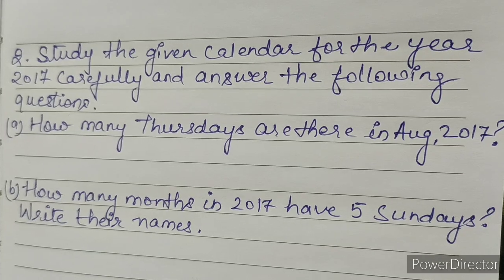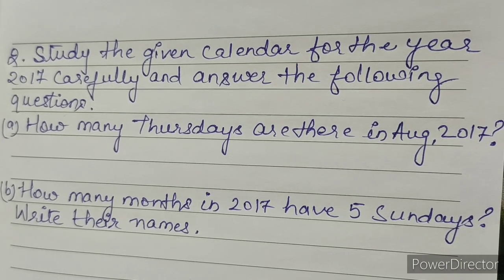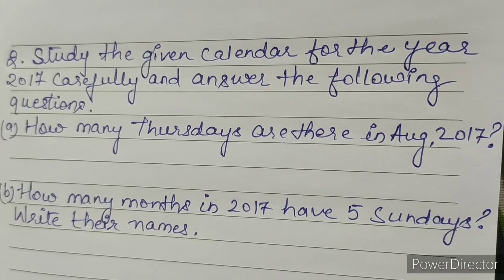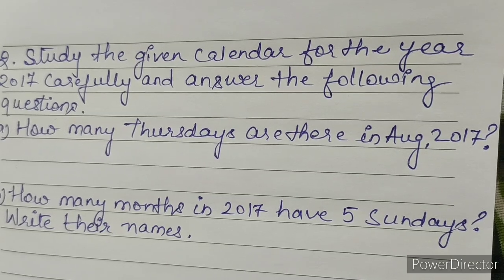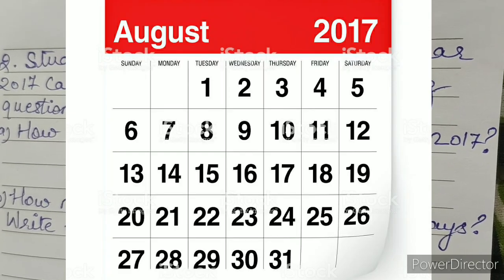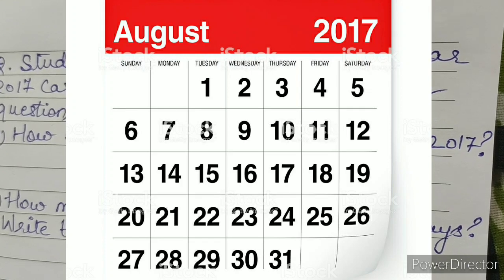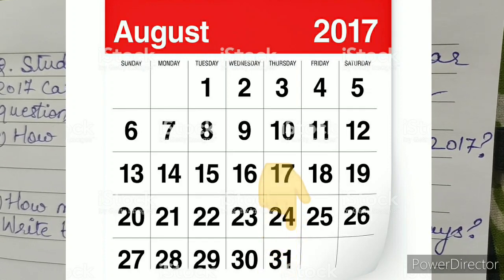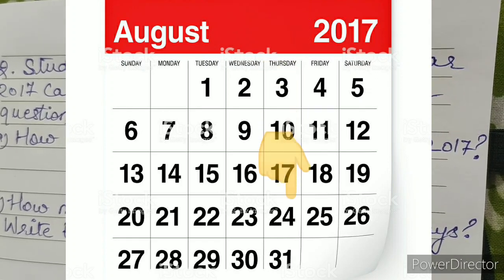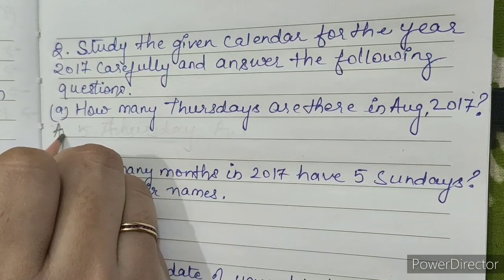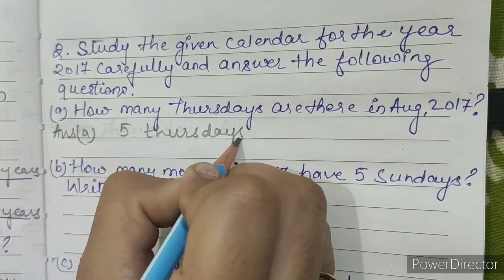Question number 2. Study the given calendar for the year 2017 carefully and answer the following questions. A. How many Thursdays are there in August 2017? Looking at the calendar of 2017, in the month of August there are 5 Thursdays. Answer: 5 Thursdays.